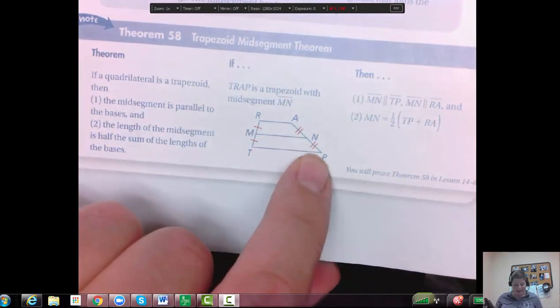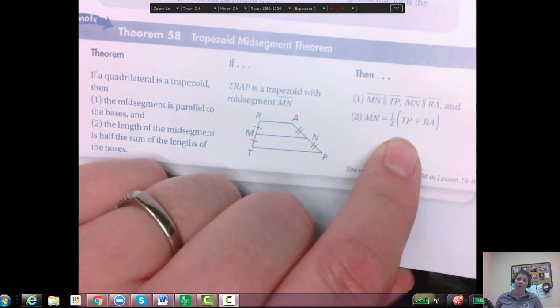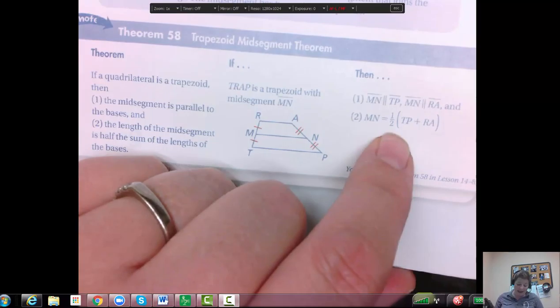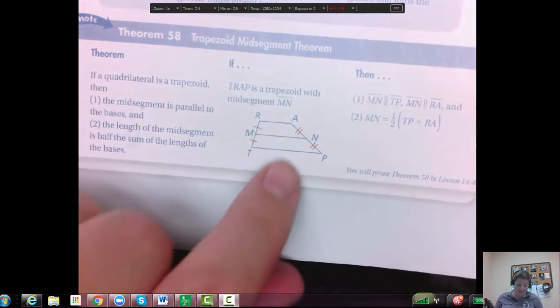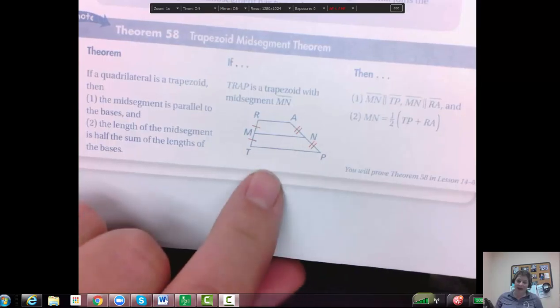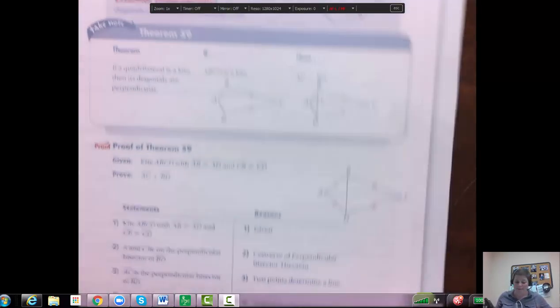If that's true, then you have this formula for that midsegment or line that's in the middle. It's one half of the top one plus the bottom one, and you will see a couple problems similar to that. Let's do one so that we make sure you know how to do it correctly.